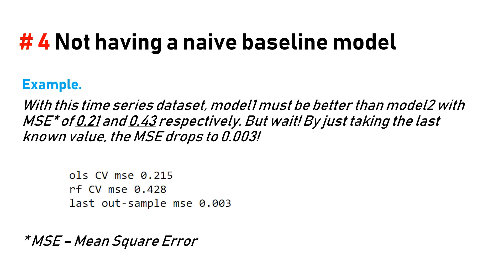Compare your model performance against a zero-intelligence forecast. Example: with this time series data, model one might be better than model two with mean squared errors of 0.21 and 0.43 respectively. But by just taking the last known value, the mean squared error drops to 0.003.